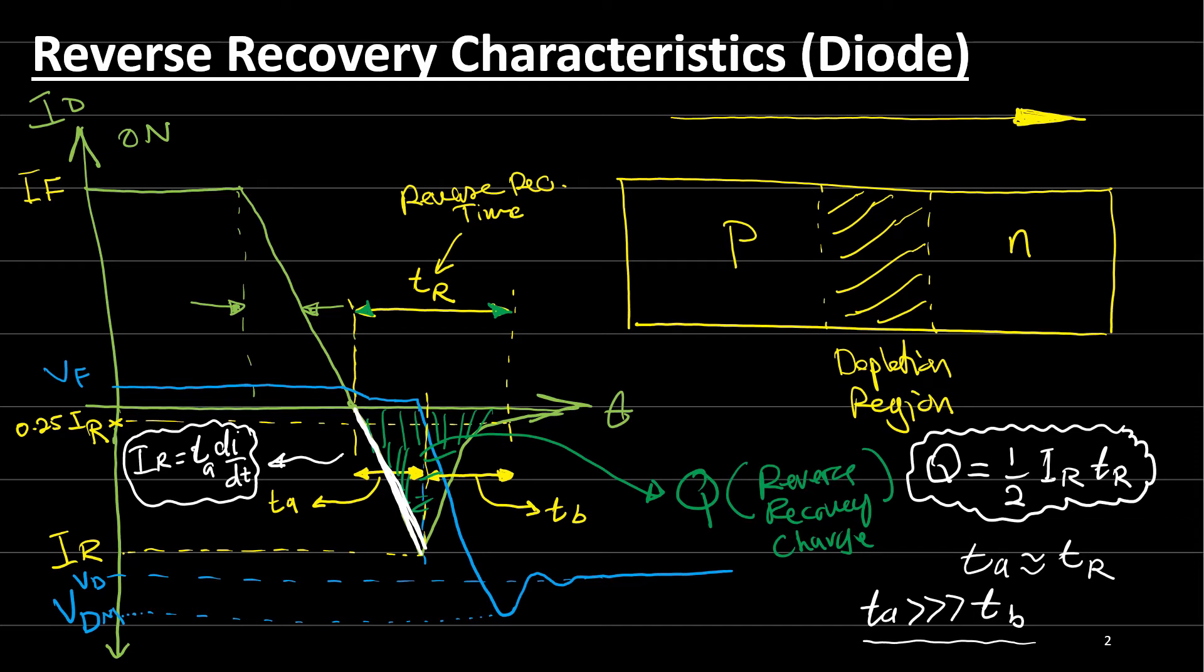Again, this equation comes from when we say that dI by dt, the rate of change of the current is equal to the current IR over the time period. The maximum current is IR, the maximum time is TA. And from this we can say IR is equal to TA times dI by dt.